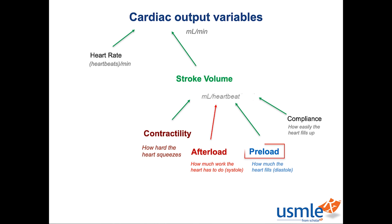Increasing the preload — or how much the heart fills during diastole — increases stroke volume in a manner that's actually more complex than you might realize. Check out the section on the Starling Curve for a better explanation. The important thing to remember is that since the ventricles fill passively with venous blood, the main determinants of preload are the amount of blood in the circulation and the constriction of veins, which are the capacitance vessels that control the proportion of blood in active circulation. Preload also depends to some extent on compliance, since the ventricles fill more easily if the walls are nice and stretchy instead of stiff and rigid.